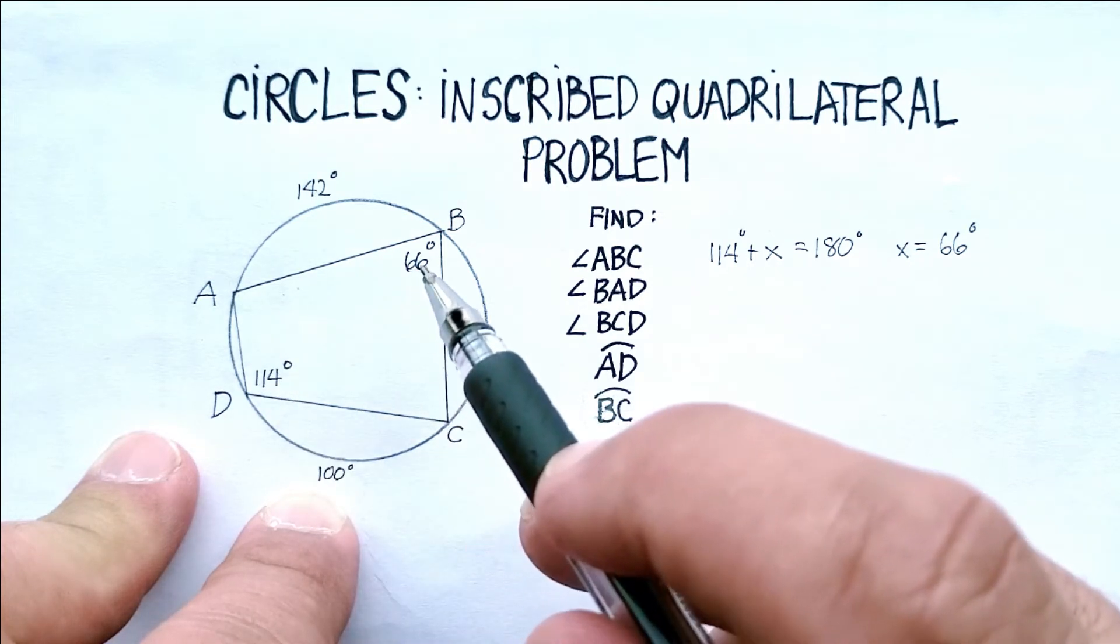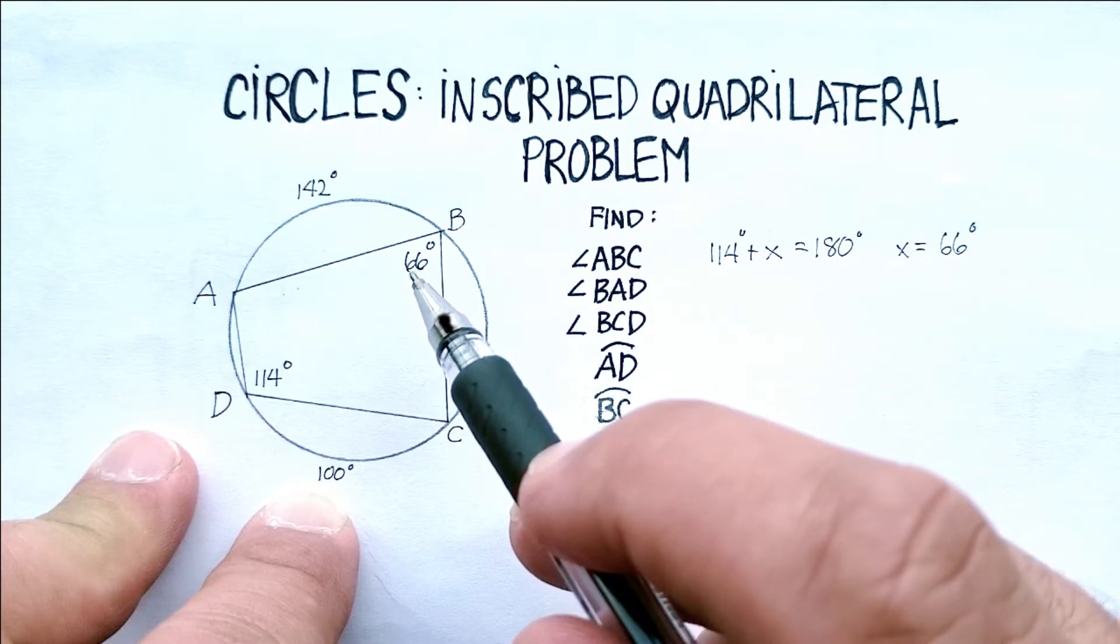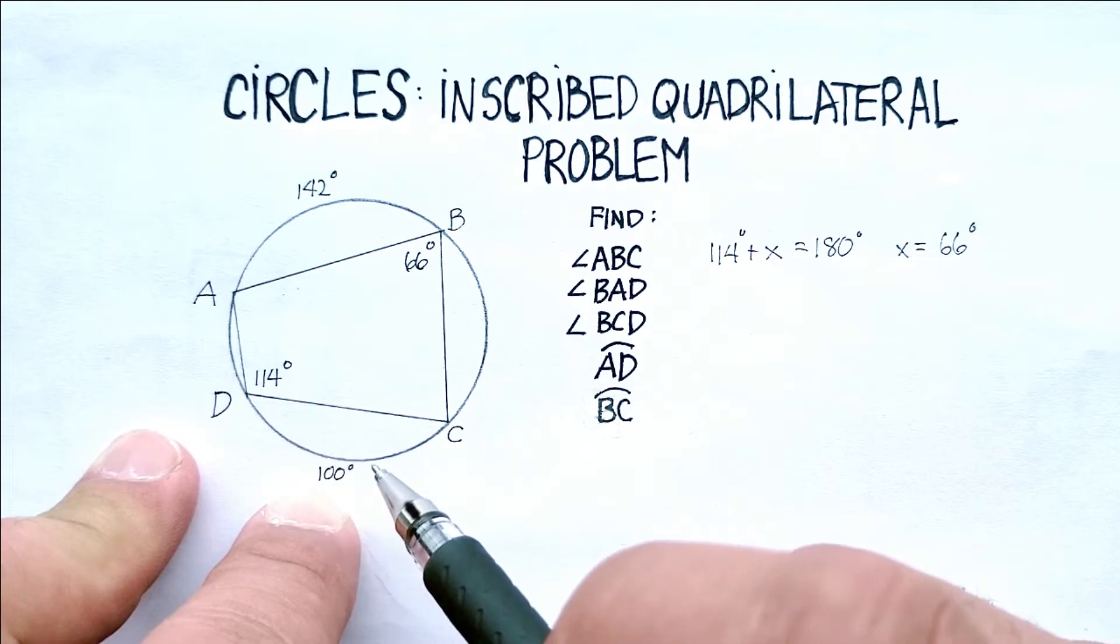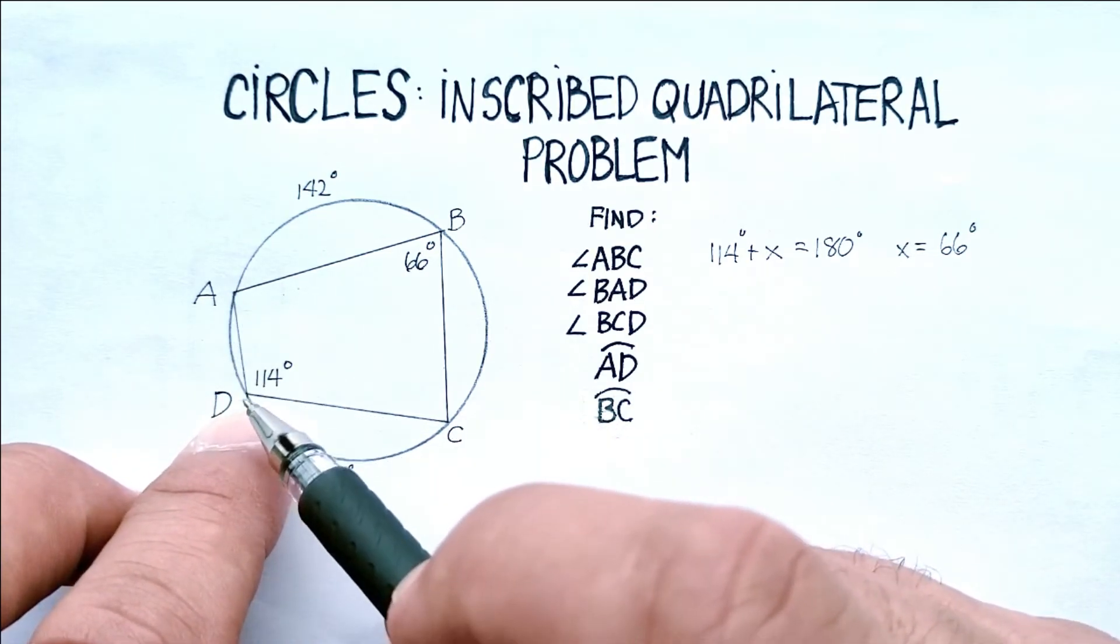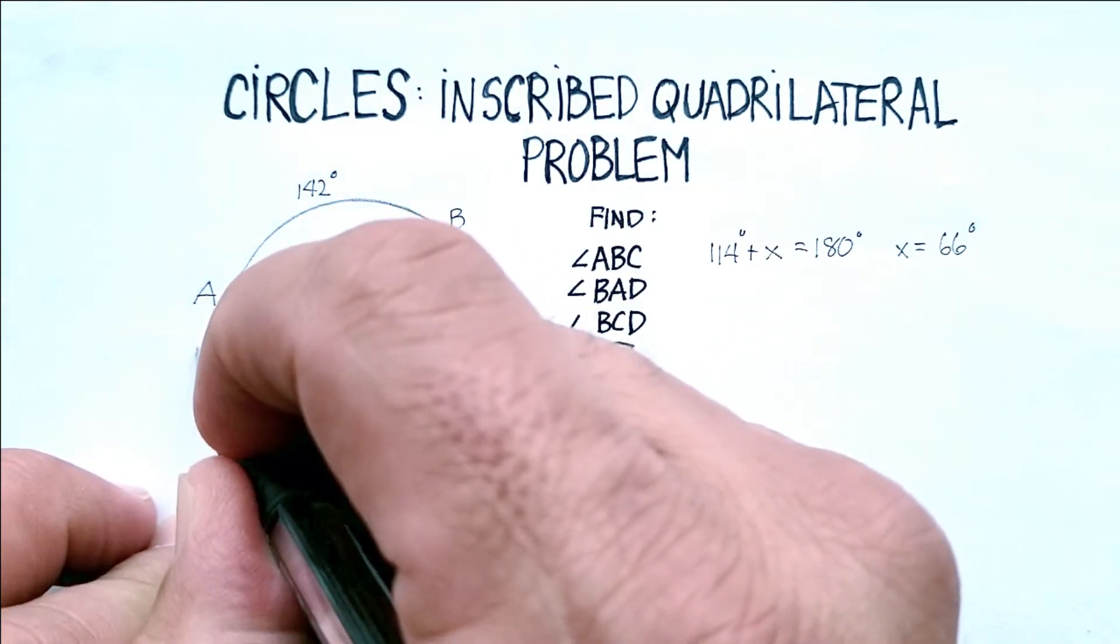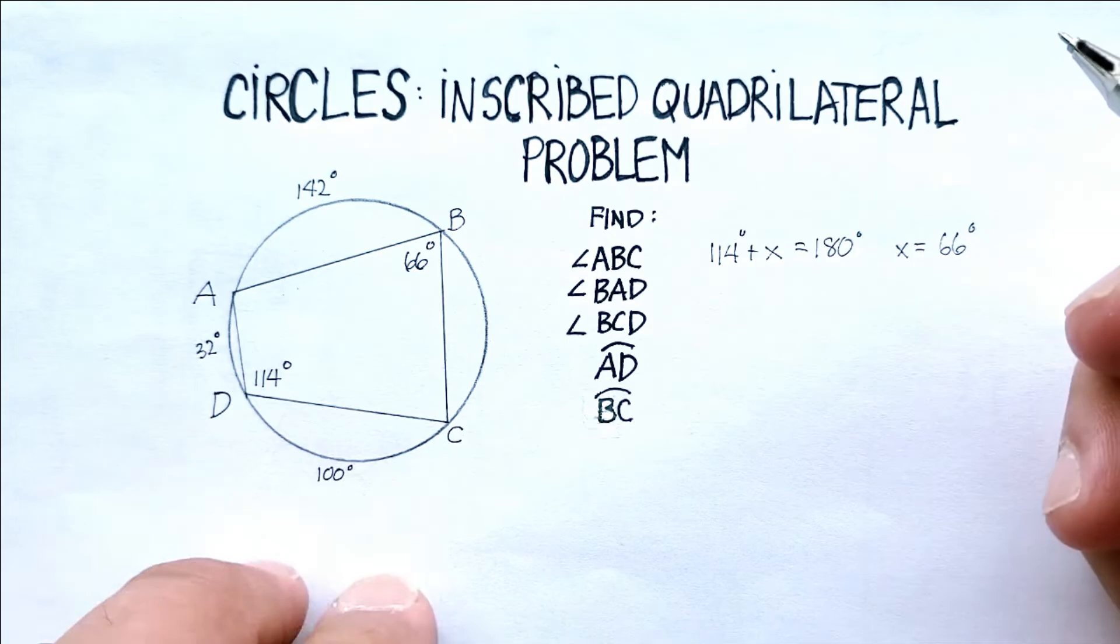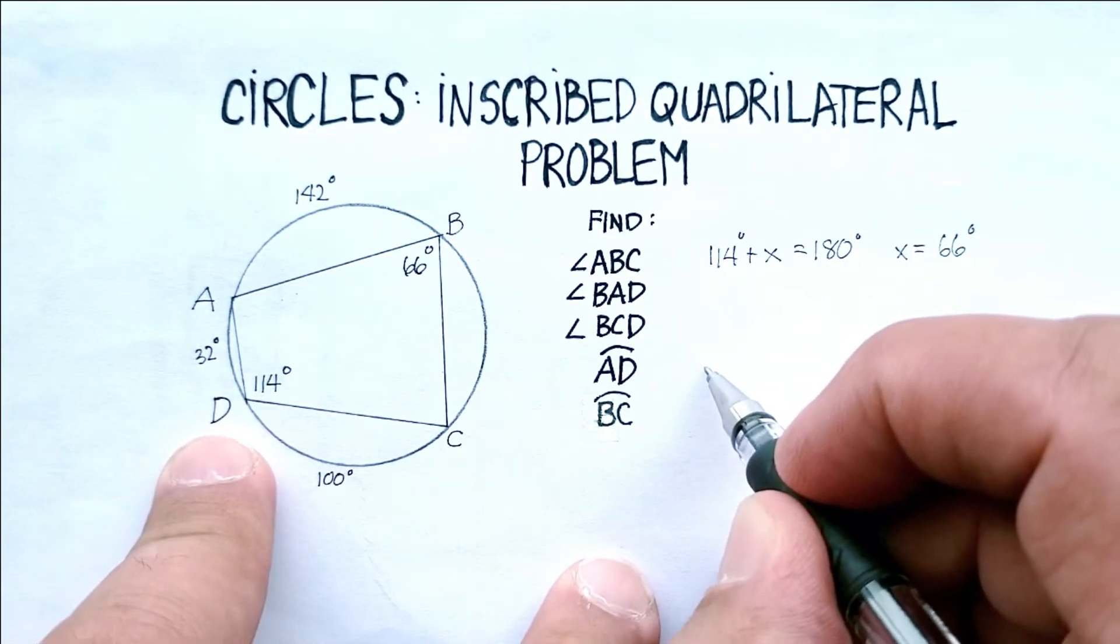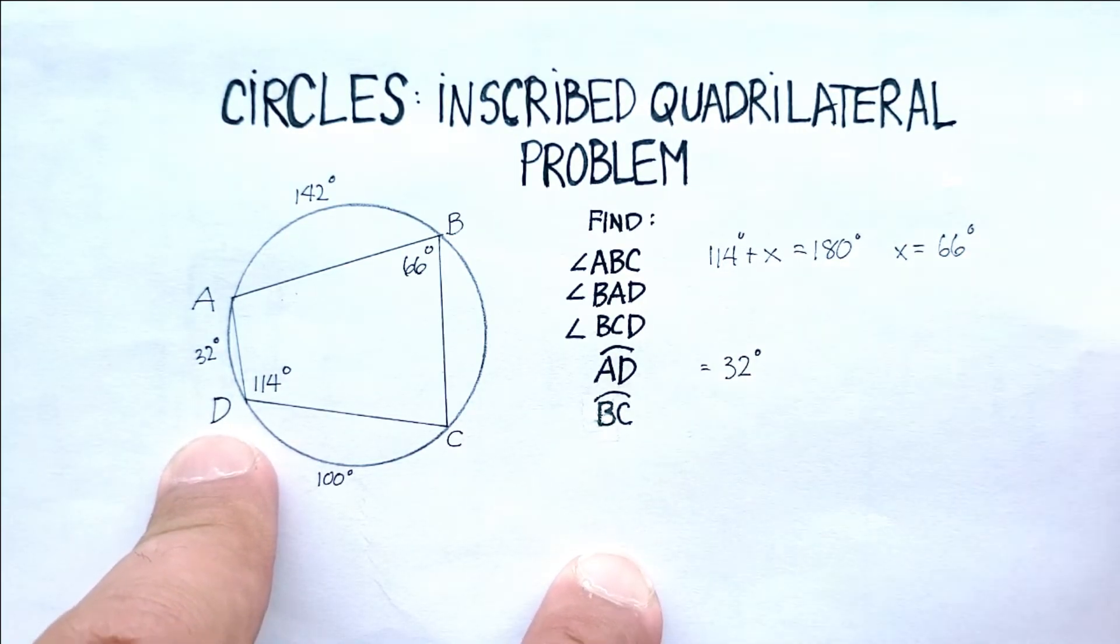So 2 times this would be 132, right? Just 2 times 66 is 132. We know we already have 100 degrees. So this part here, AD should be equal to 32 degrees. Okay, so now we have arc AD is equal to 32 degrees.